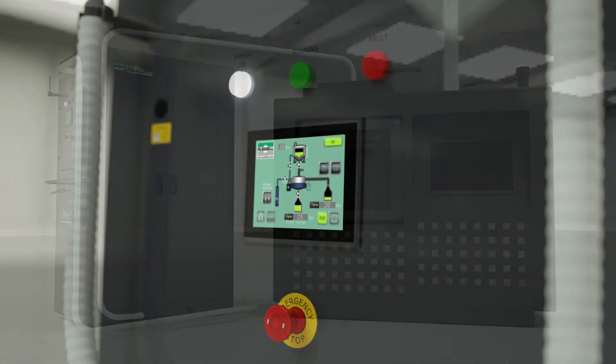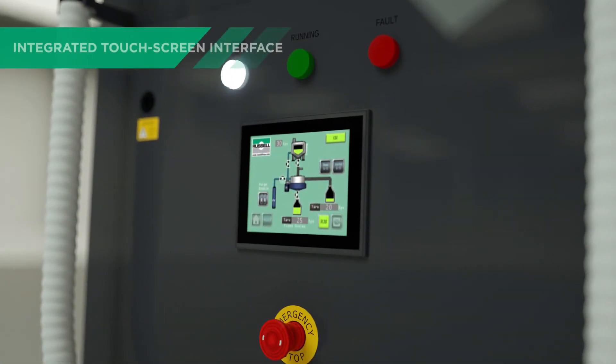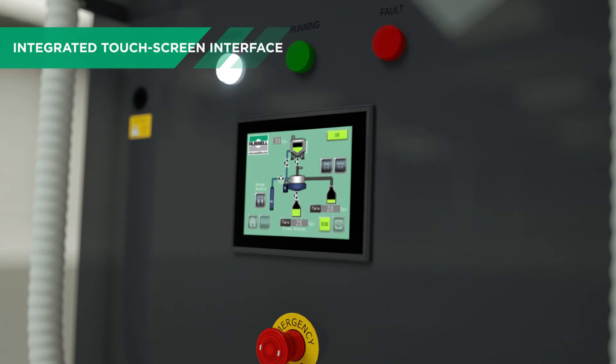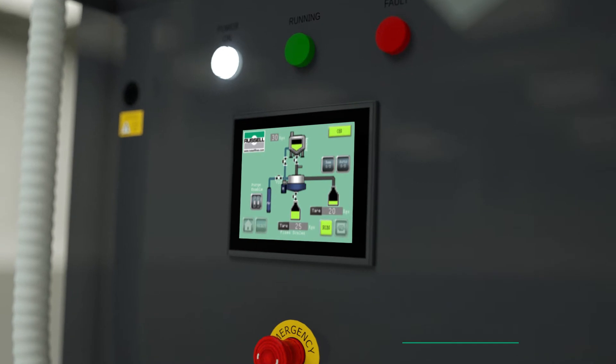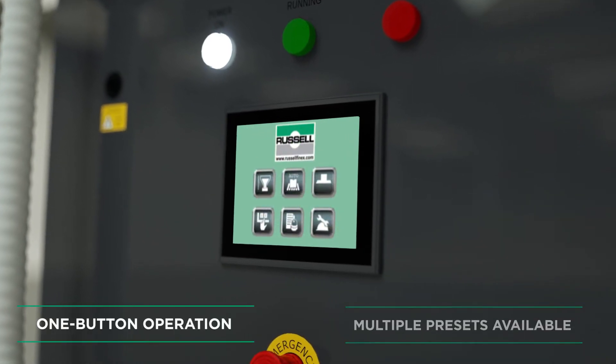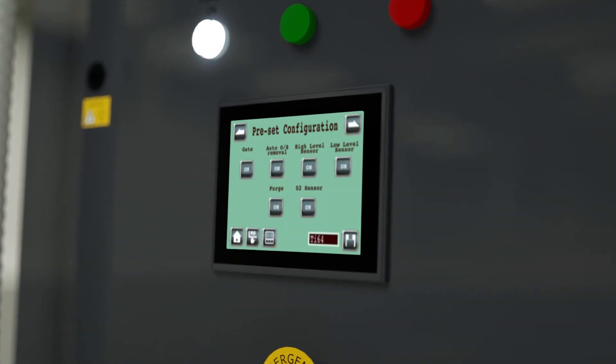The Russell Ampro SIF station has a range of integrated features, controlled by a revolutionary integrated touchscreen interface. This is a game-changer for the industry, fully programmable with multiple presets, allowing simple one-button operation.